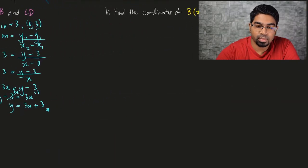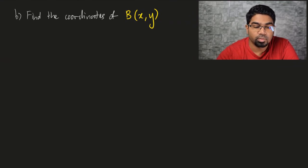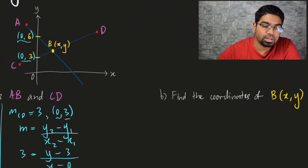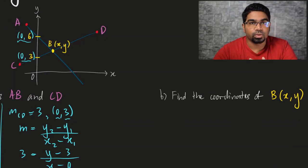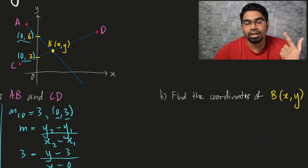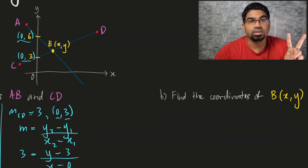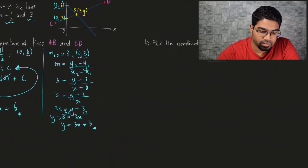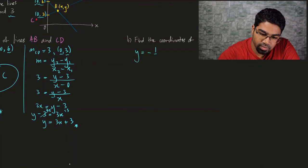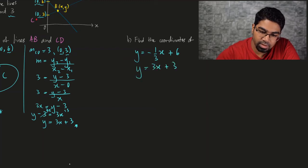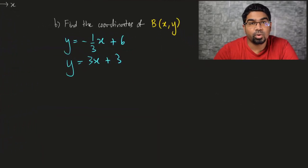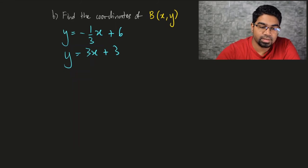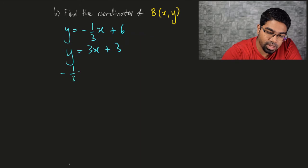Let's look at the next part: find the coordinates of B. B is the intersection point between the two lines. The intersection is a single point present on both lines, which means the x and y coordinates are the same for both equations. So all we have to do is solve simultaneous equations. Our two equations are: y = −(1/3)x + 6, and y = 3x + 3. We equate the two expressions for y since it's an intersection: −(1/3)x + 6 = 3x + 3.